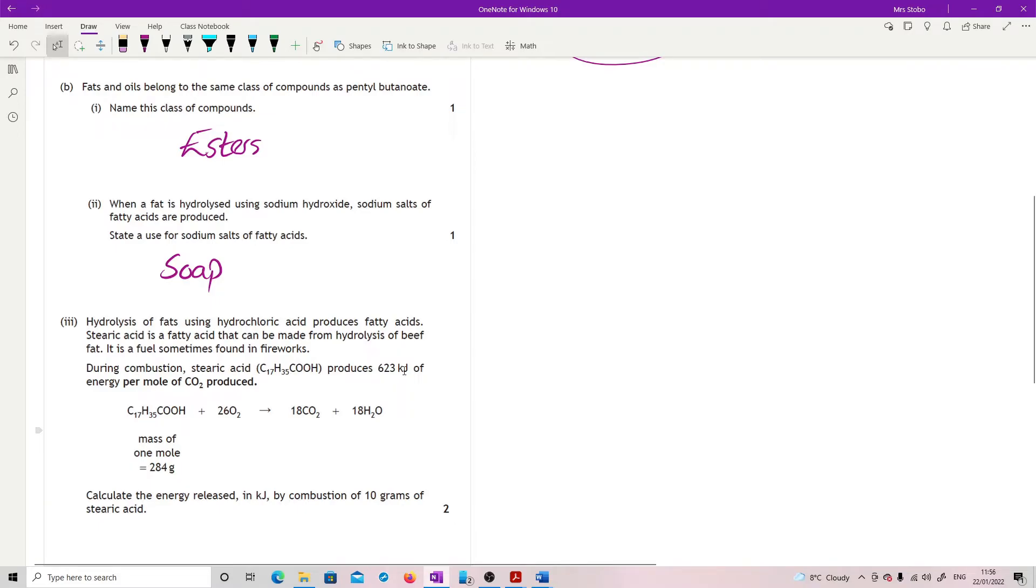During combustion, stearic acid produces 623 kilojoules of energy per mole of carbon dioxide produced. Here's your equation. Calculate the energy released in kilojoules by combustion of 10 grams of stearic acid. So what we have here is C17H35COOH to carbon dioxide, because this is how I'm going to have to work from this one. This is one mole of these to 18 moles of these.